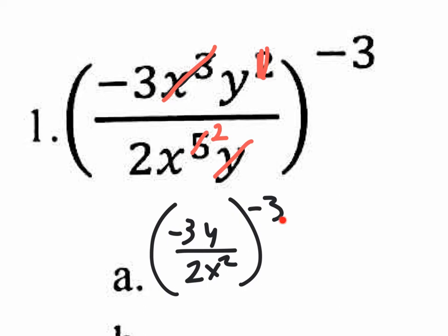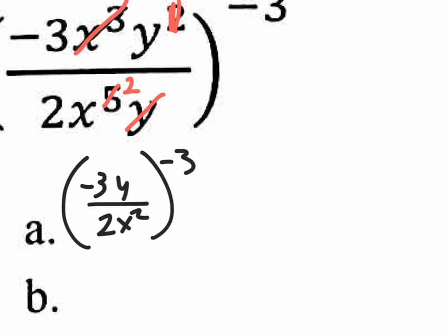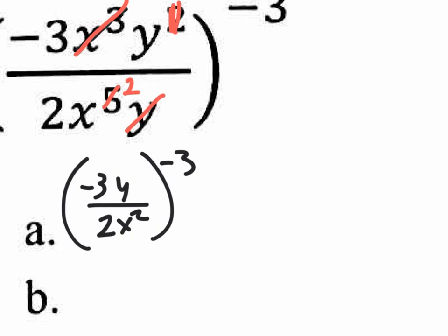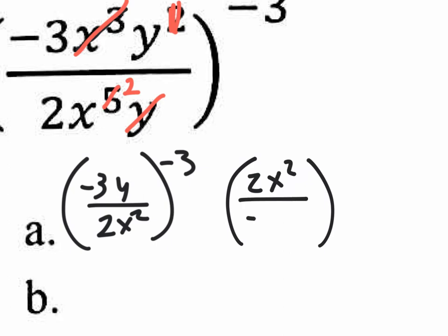Now you could distribute first, but then you're going to have a bunch of negative exponents and you'll have to flip all of them. Or you could flip everything first, change that to a positive, and then distribute the three. It's really up to you — distribute first and then flip, or flip the whole thing first and then distribute a positive three, not a negative three. Let's flip it first.